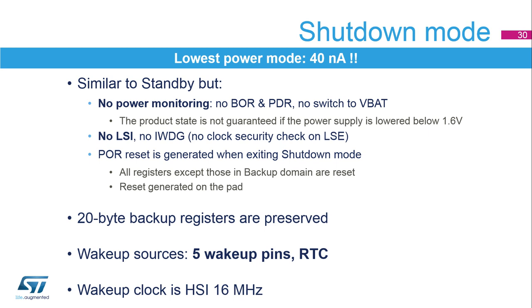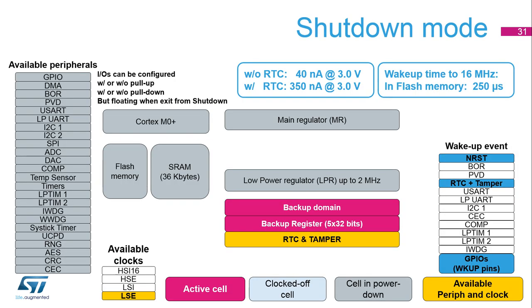When exiting shutdown mode, the wake-up clock is HSI at 16 MHz. In shutdown mode, the main regulator and the low-power regulator are powered down. The RTC, clocked by the external low-speed oscillator, can remain active. The brown-out reset is deactivated. Only the external low-speed clock can be enabled. The wake-up events are the RTC and tamper events, the reset, and the five wake-up pins. The shutdown consumption without RTC is around 40 nanoamps typical at 3 volts. The wake-up time is typically 250 microseconds.